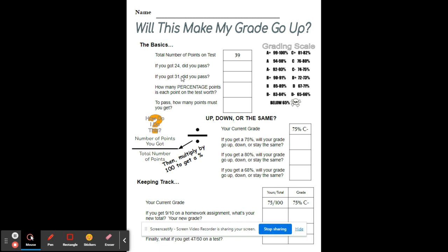If you didn't, then you failed. So then take 31 divided by 39 and then multiply it by 100, that'll give you a percent, and then you see, was that above your 65%?